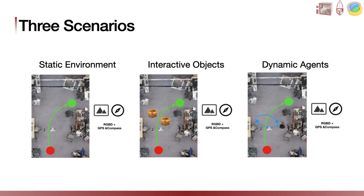Therefore, in this scenario we allow and even encourage the robot to interact with these interactive objects, while still disallowing collision with static objects such as walls or large furniture. The main challenge is that the robot needs to understand the environment semantically and learn which objects are interactive and which are not. The third scenario is navigating in an environment with dynamic agents — such as humans or other robots moving around in the space. The robot needs to understand their navigation patterns and avoid colliding with them before reaching the goal. In our experiments, we use a TurtleBot as our dynamic agent.